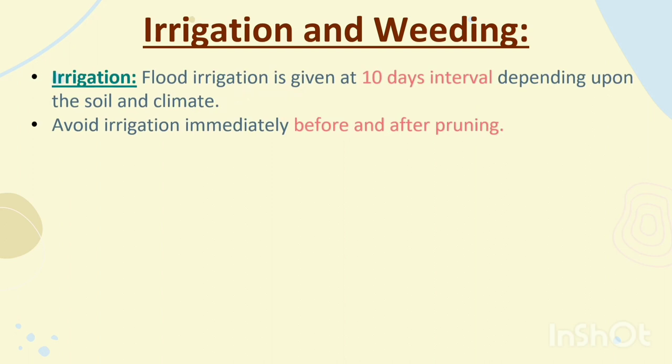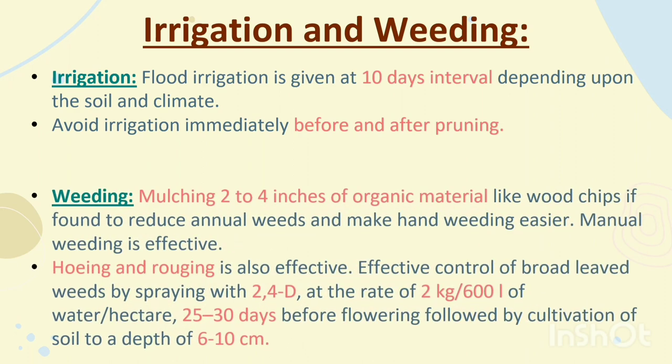Irrigation and Weeding. Irrigation: flood irrigation is given at 10-day intervals depending upon the soil and climate. Avoid irrigation immediately before and after pruning. Weeding: mulching with 2–4 inches of organic material like wood chips helps to reduce annual weeds and make hand weeding easier. Manual weeding and hoeing are also effective. Broad-leaf weeds can be effectively controlled by spraying 2,4-D at the rate of 2 kg per 600 litres of water per hectare, 25–30 days before flowering, followed by cultivation of soil to a depth of 6–10 cm.